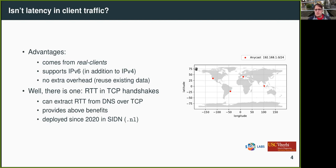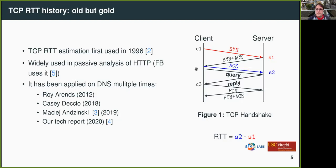DNS must support both UDP and TCP on the server side. You can use information from the handshake to extract the RTT — it provides all the benefits. We have been deploying that since 2020 at SIDN, which runs the ccTLD for .NL.